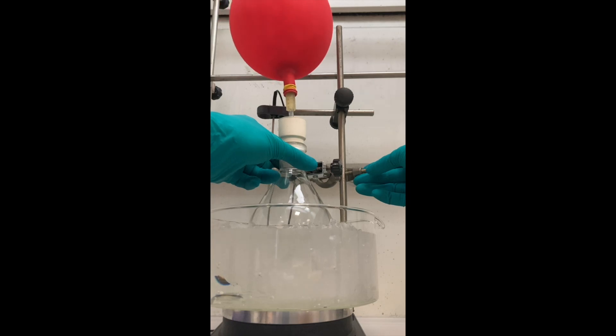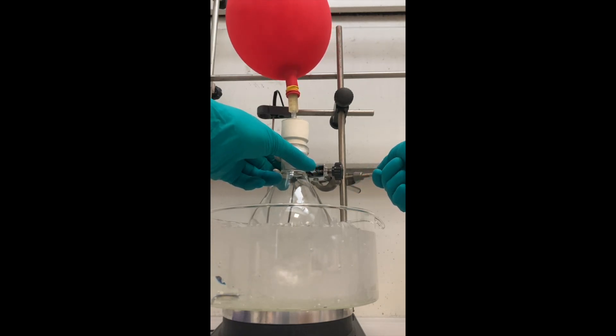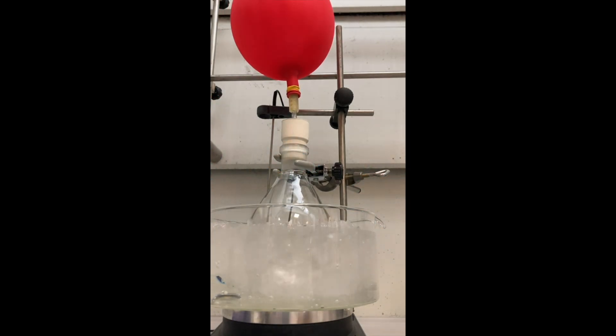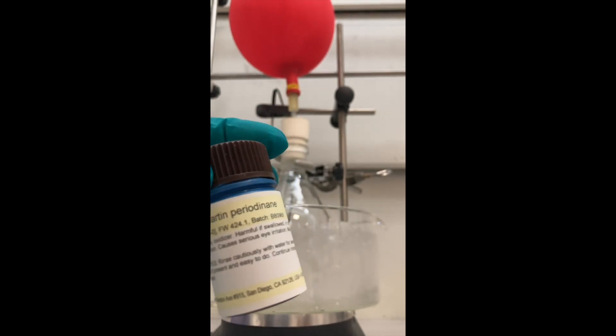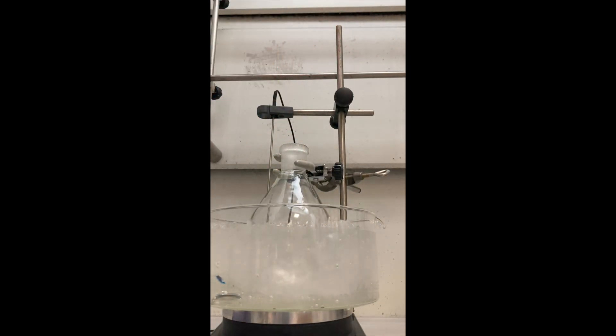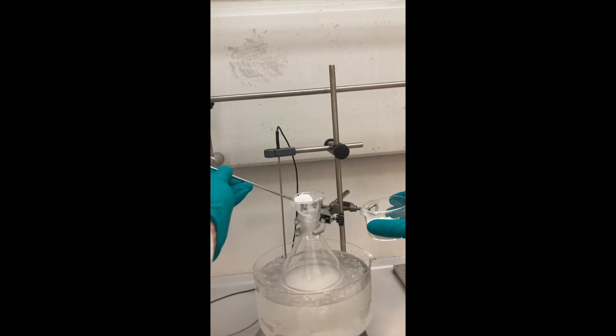To a stirred solution of my alcohol dissolved in dichloromethane under an argon atmosphere, I added solid Dess-Martin periodinane in several portions over 30 minutes, while vigorously stirring the reaction mixture at zero degrees Celsius.